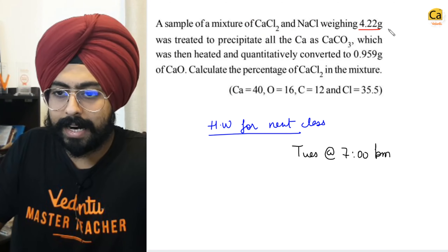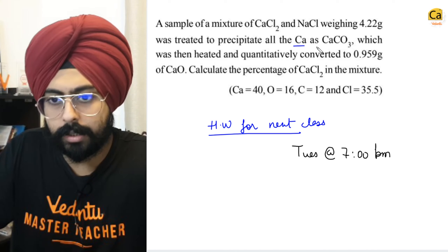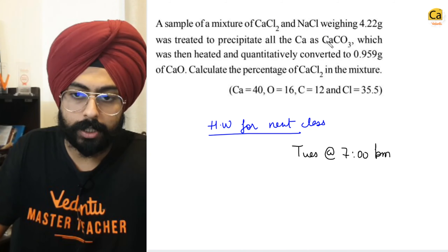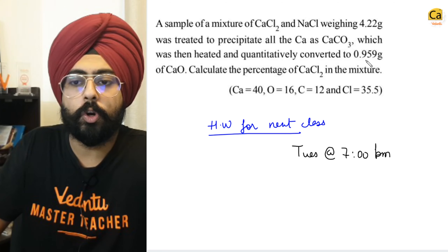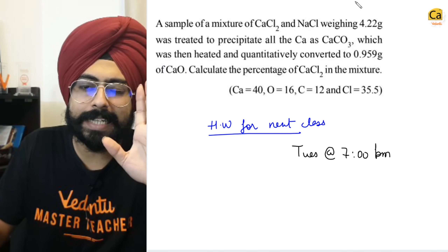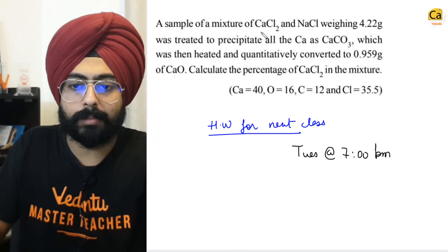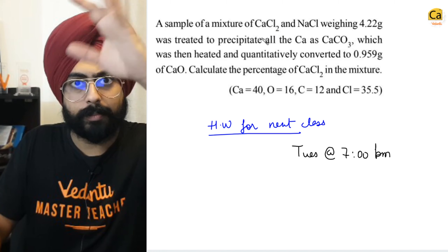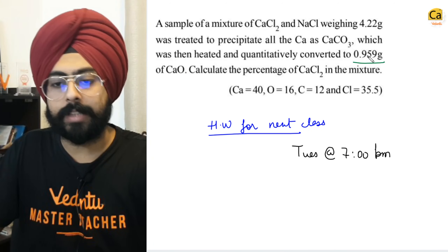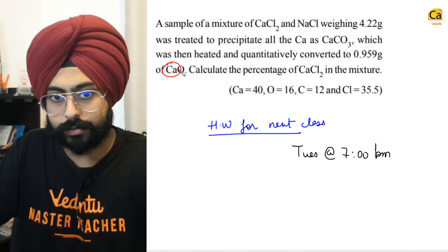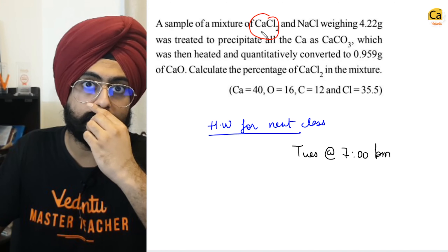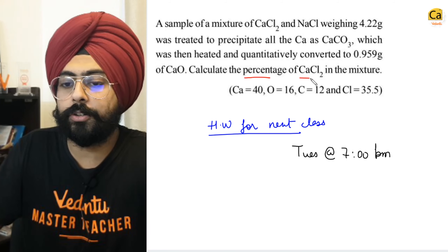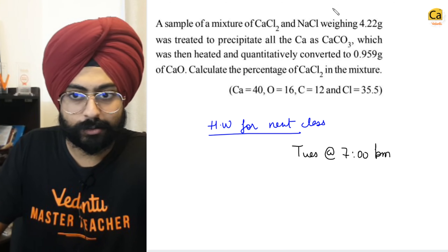A sample of a mixture of CaCl2 and NaCl weighing 4.22 grams was treated to precipitate all the calcium as calcium carbonate, which was then heated and quantitatively converted to 0.959 grams of CaO. From this you can calculate the moles of calcium, then moles of CaCl2, then weight of CaCl2, and finally the percentage of CaCl2 in the total mixture.